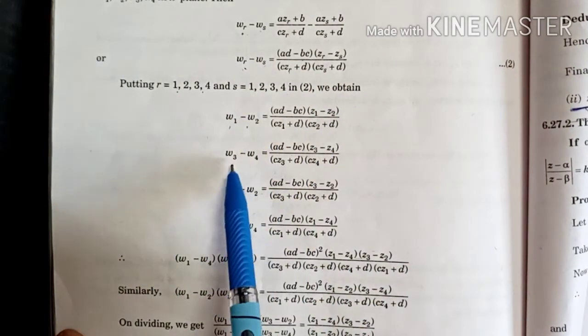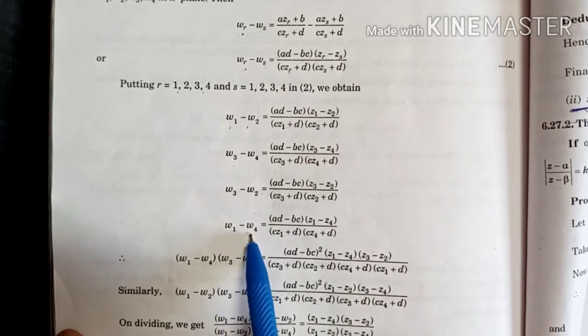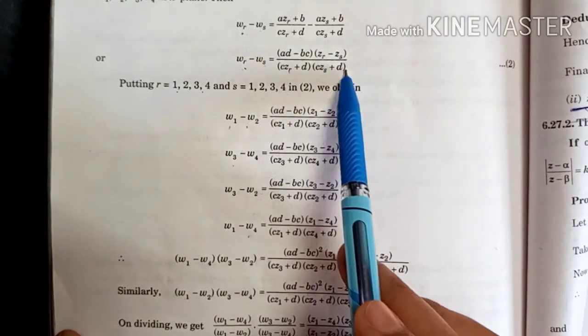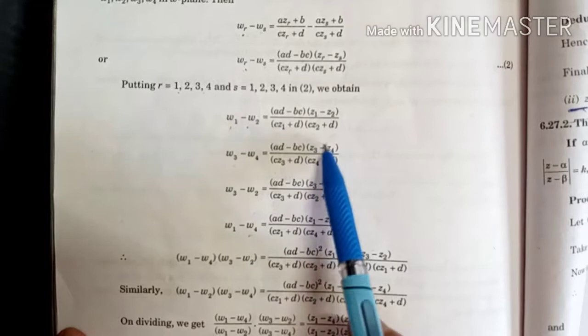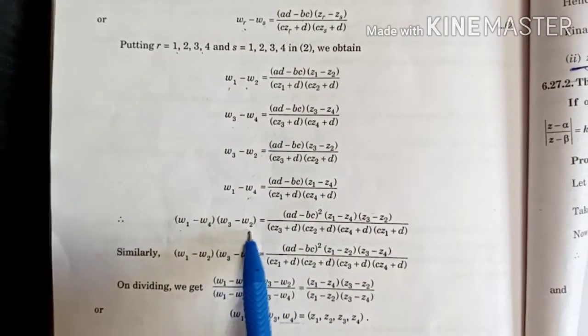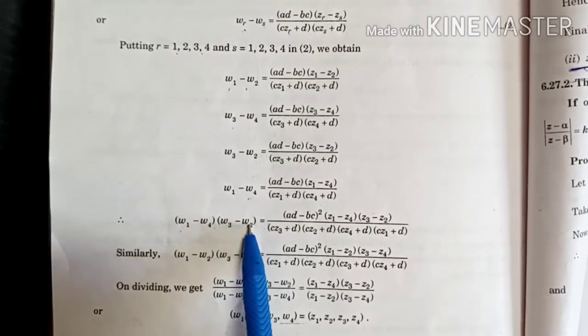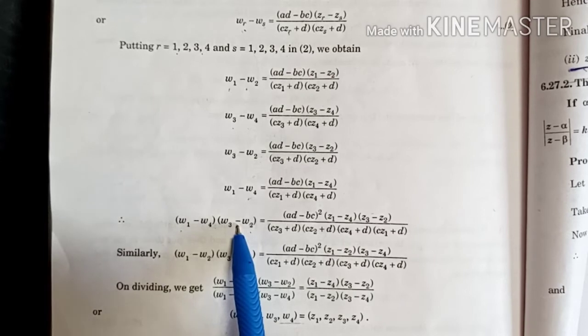Similarly, whichever we need to find out: W3 minus W4, W3 minus W2, and W1 minus W4, corresponding values we will put. Now we need to prove numerator W1 minus W4 by W3 minus W2. So the numerator, we need to find the product of both.